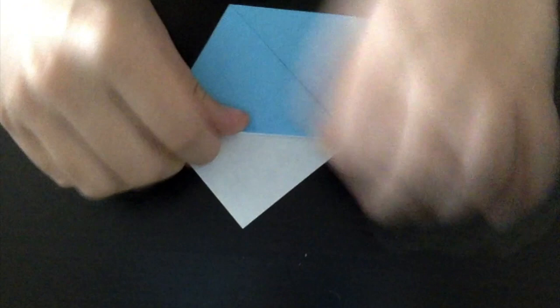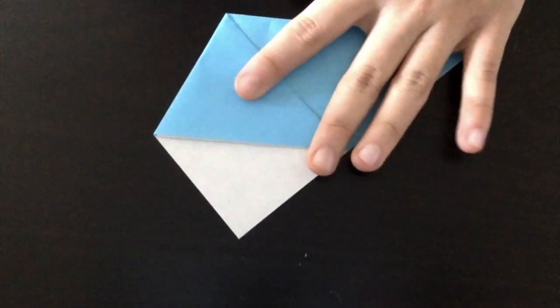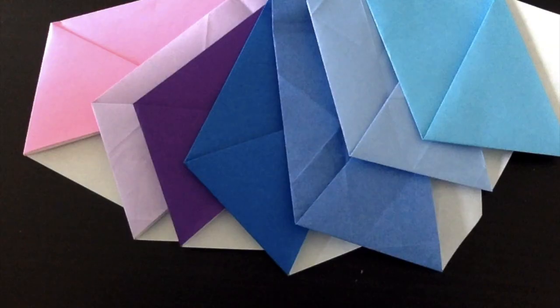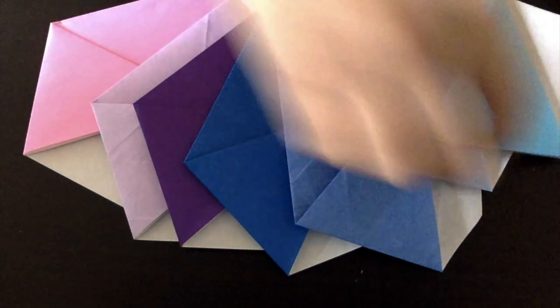And that's it! That's how you make one of the seven pieces you're going to need today for your spinning top. So now, pause the video and rewind to make six more of those shapes.